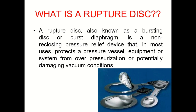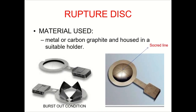It is a bursting disk — a non-reclosing pressure relief device, used for protection purposes only. The rupture disk components or materials are typically metal or carbon graphite.